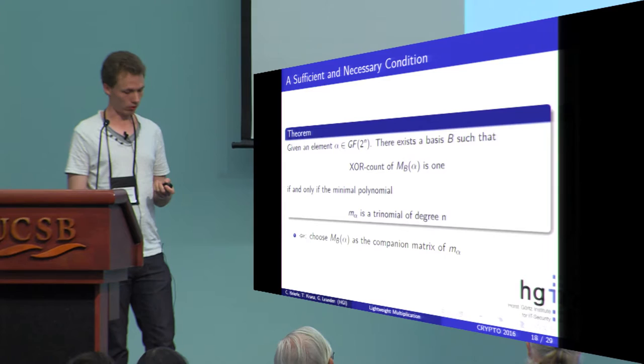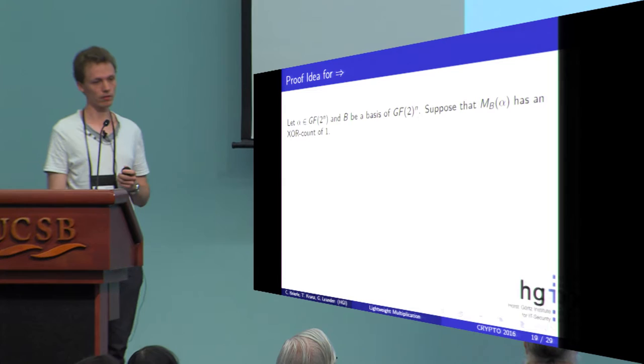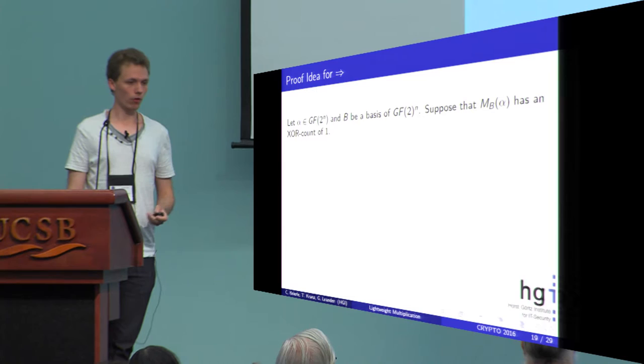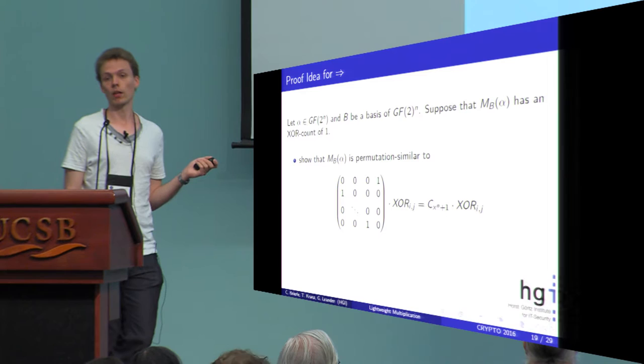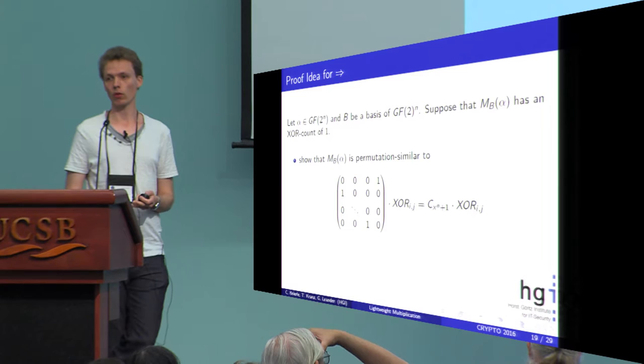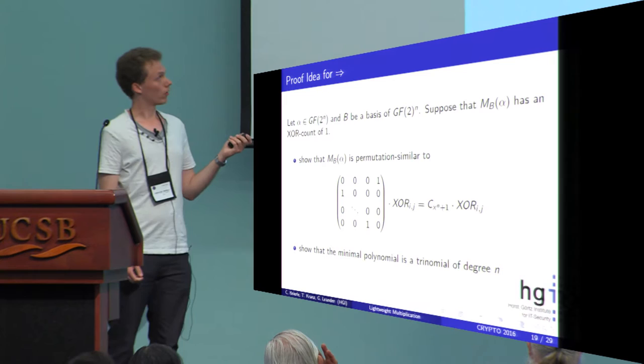The more interesting case is that having a trinomial of degree n is also a necessary condition. The proof idea for this is: if we consider an element alpha and a basis B for the field, and suppose we have a matrix with an XOR count of one, the first thing you can show is that this matrix is permutation similar to this form. We know the structure of the permutation we apply. Since the XOR count is invariant under permutation similarity we then only have to show that the minimal polynomial of this matrix is a trinomial of degree n. This is easier because we already know the structure of this matrix.